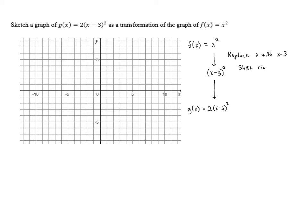So we shift right 3 units. Then to go from x minus 3 squared to 2 times the quantity x minus 3 squared, we need to take this function and multiply it by 2 — so we replace our function with 2 times our function.